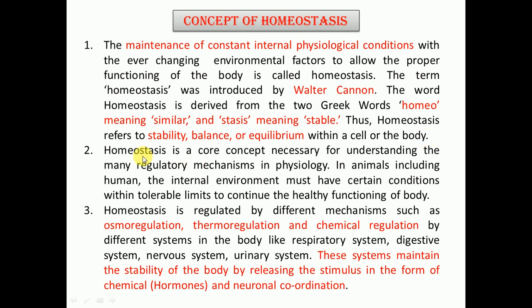Homeostasis is a core concept necessary for understanding many regulatory mechanisms in physiology. In animals, including humans, the internal environment must have certain conditions within tolerable limits to continue healthy functioning. This term tolerable limits is very important because homeostasis works only within these tolerable limits. For example, if an animal is set on fire, that is above the tolerable limits and homeostasis cannot be justified in that organism.